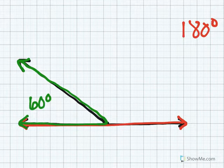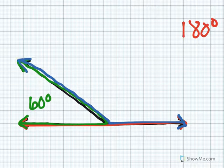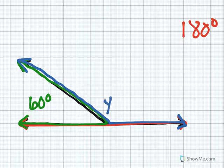We do not know the measurement of this unknown angle. However we know that this unknown angle Y plus 60 degrees needs to equal 180 degrees.